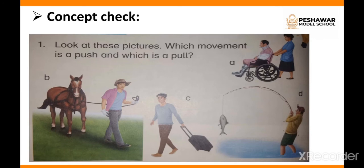Now this is a concept check. Look at these pictures — which movement is a push and which is a pull? Circle the pull movements in red and the push movements in blue. In the first picture, a lady is helping a patient in a wheelchair using a pushing movement. In the second picture, a man is pulling a horse on a lead rope — that is a pulling force. In the third picture, a boy is pulling his luggage bag. In the fourth picture, a man is trying to catch a fish with a rod.